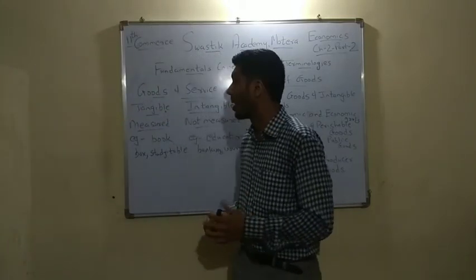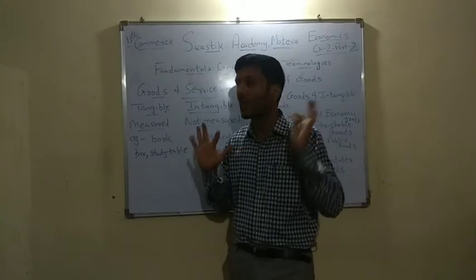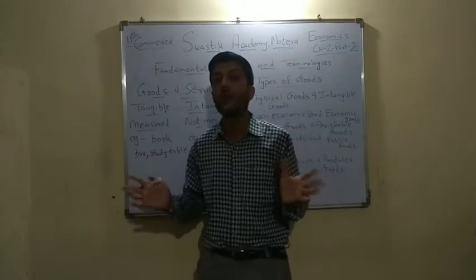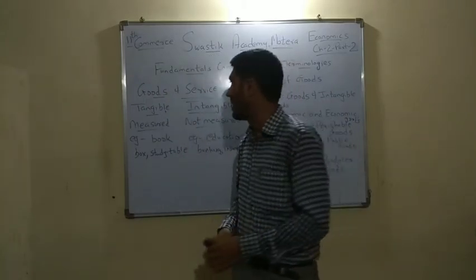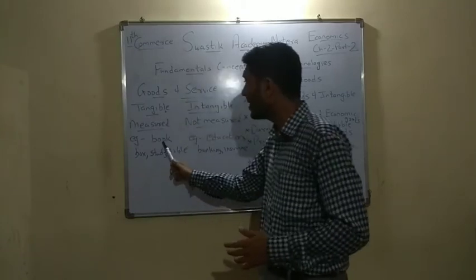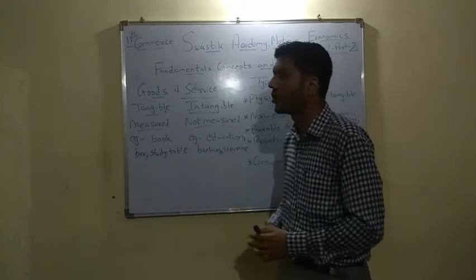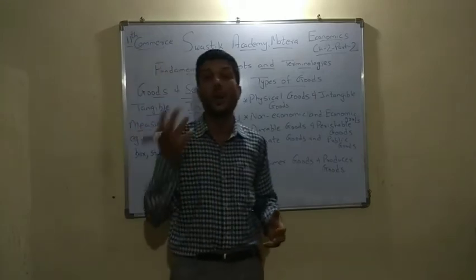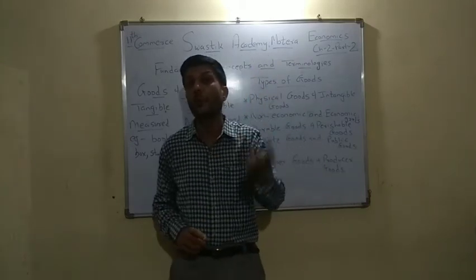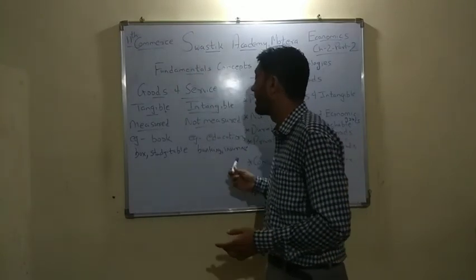I hope aapko yeh samajh aa gaya. Ek baar aur revision kar lete hain. Goods and services — goods kya hain: tangible hain, yani usko aap chhoo sakte ho aur use kar sakte ho. Intangible: you cannot see it, you can just feel it. Measured: 1, 2, 3, 4 kg, liters, grams — is tarah se measure kiya ja sakta hai. Not measured: services ko measure nahi kiya ja sakta, sirf rate kiya ja sakta hai. Example: book is a good — so that can be seen and touched. An education: aap education lete ho toh usme aapko knowledge milta hai, knowledge ki aapko curiosity hoti hai. Us curiosity ko kaun pura kar sakta hai? Book pura kar sakti hai, par woh service aapko kaun deta hai — teacher deta hai, counselor de sakta hai. Example: box, study table bhi hai, banking, insurance.